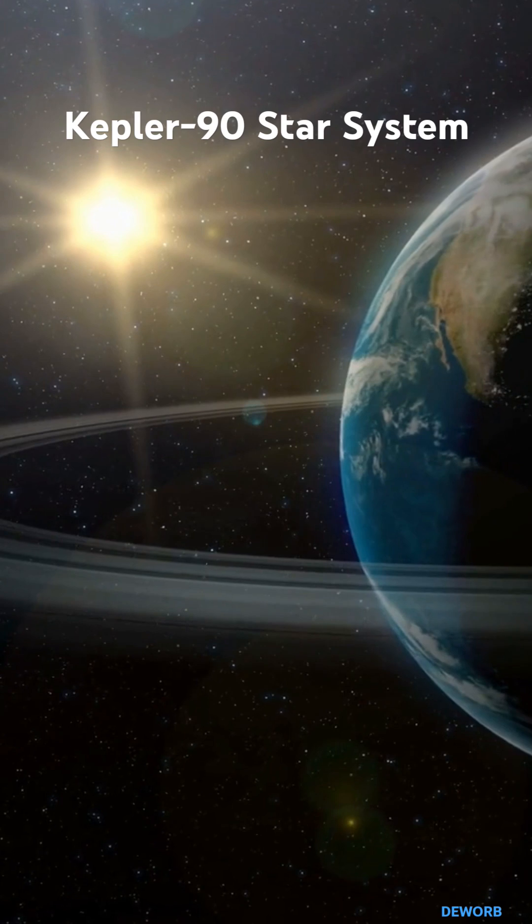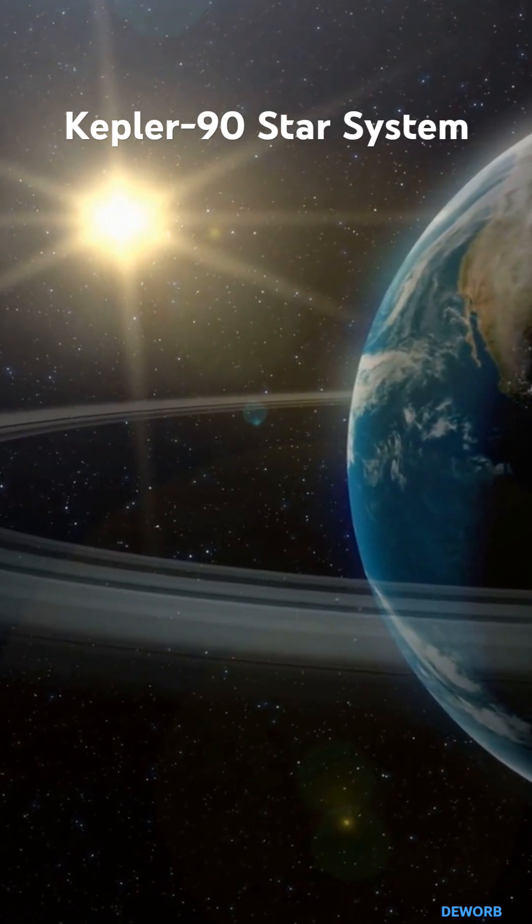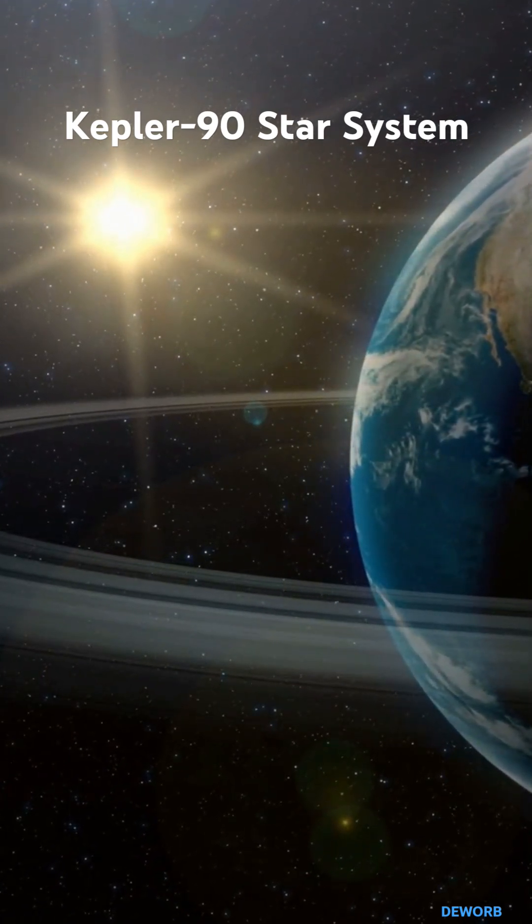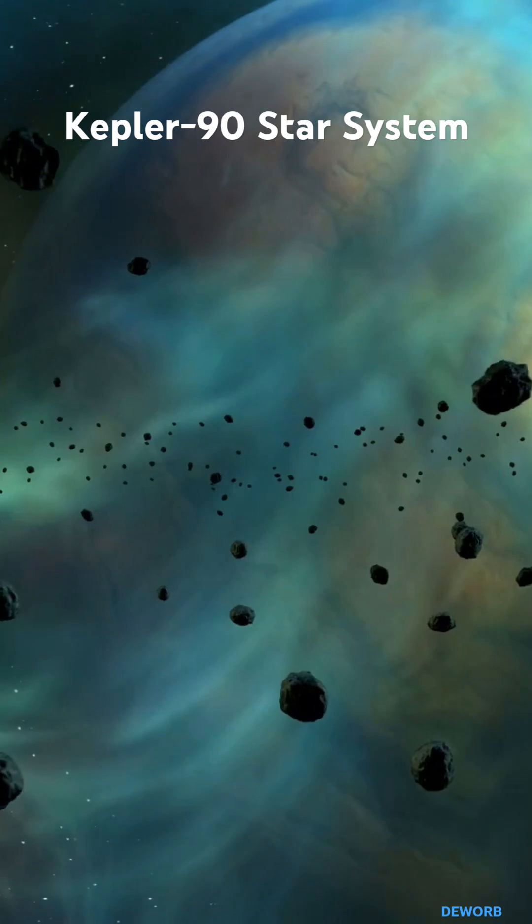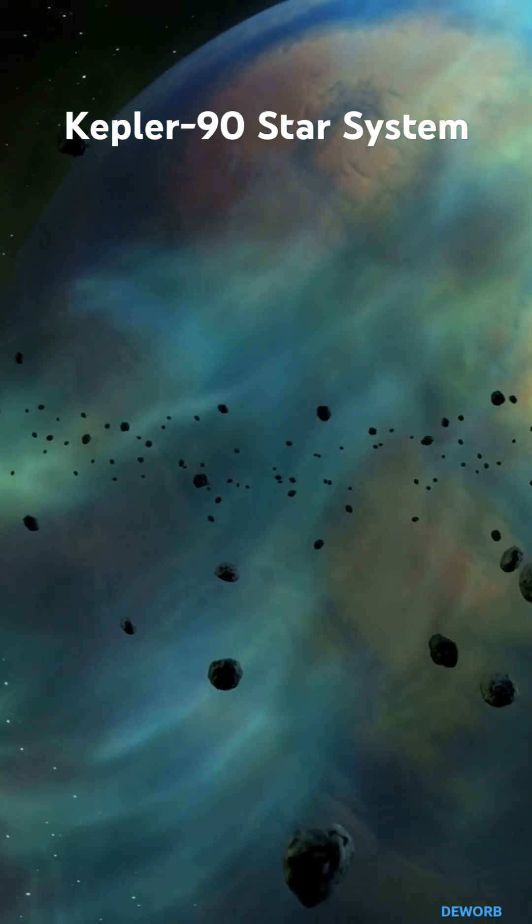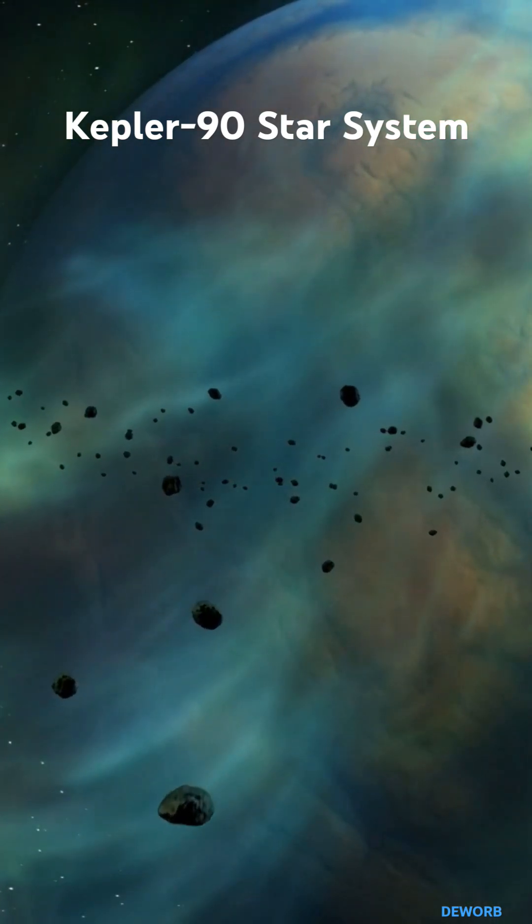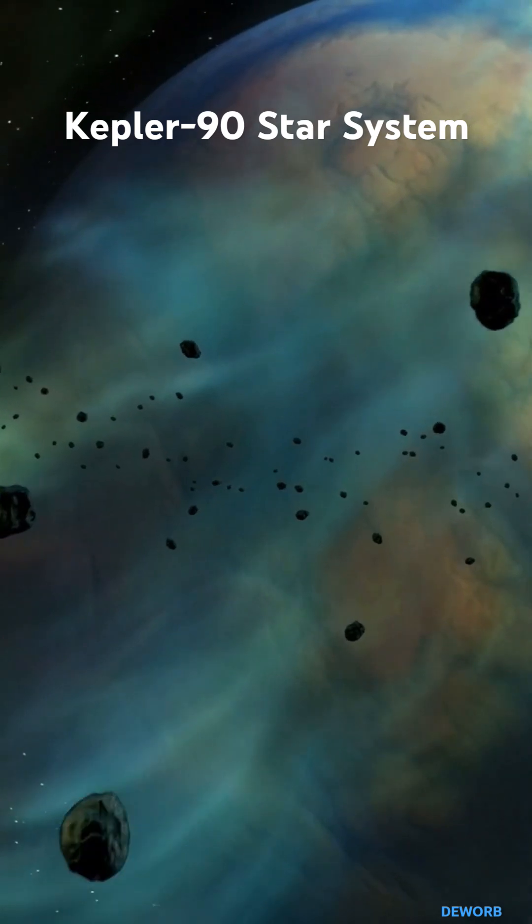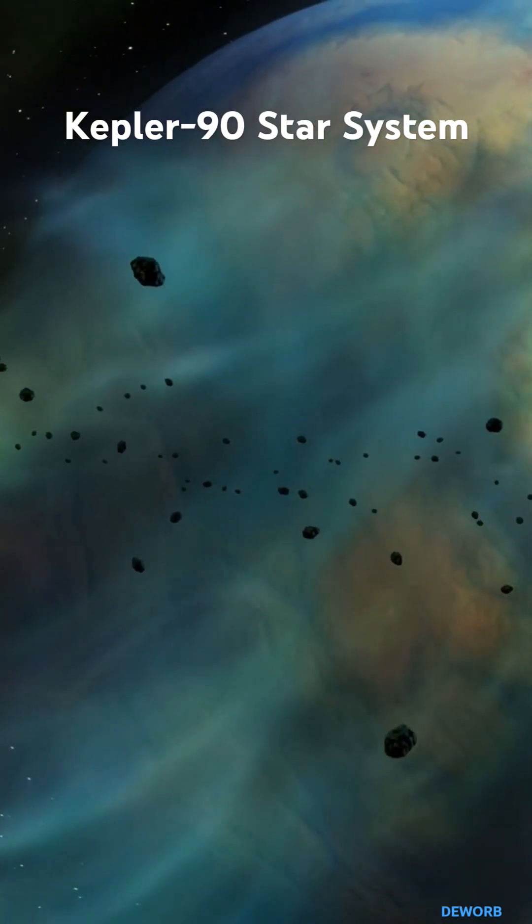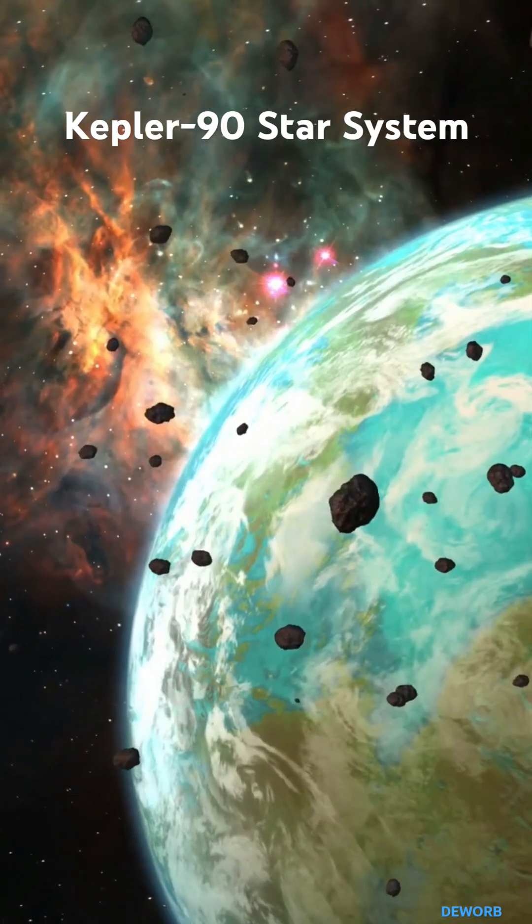Each planet has its own unique characteristics. For instance, Kepler-90g is a super-Earth, potentially rocky and larger than our planet, while Kepler-90d is a gas giant, reminiscent of Jupiter. The diversity of these worlds raises intriguing questions about their formation and the potential for life.